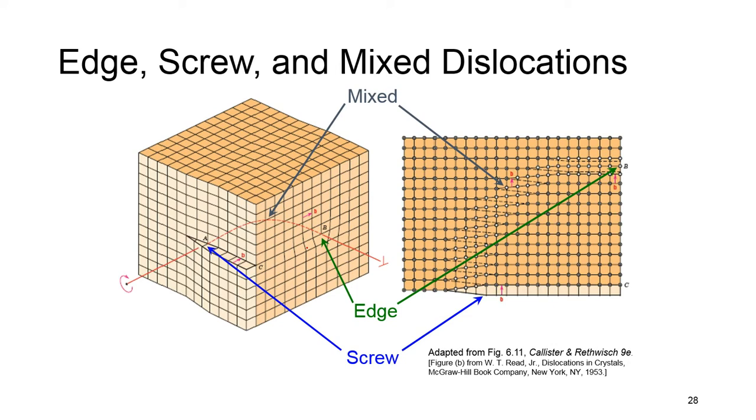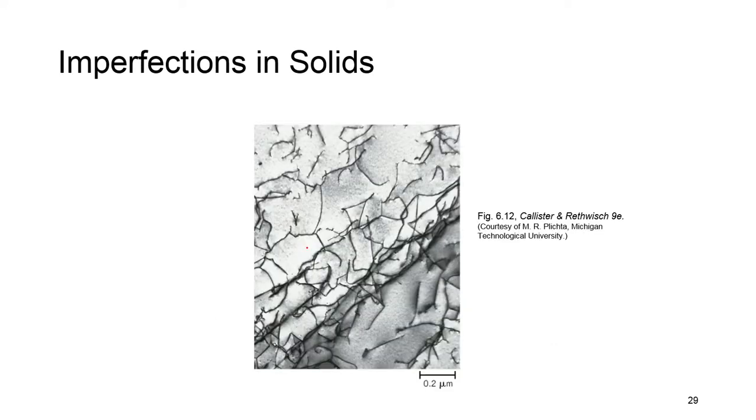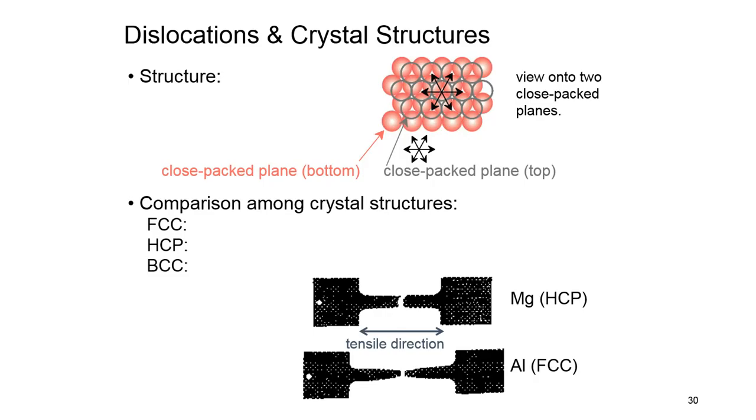Can we observe and see imperfection in dislocation? Yes, this is an SEM or scanning electron microscope graph showing dislocation in a metal, and you can compare the size of dislocation with this scale, which is 0.2 micrometers.